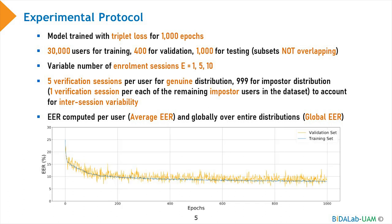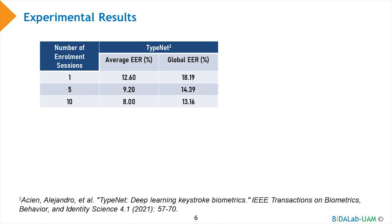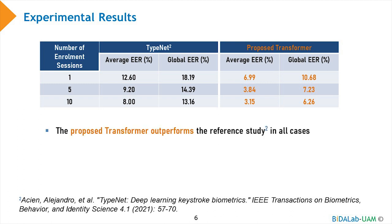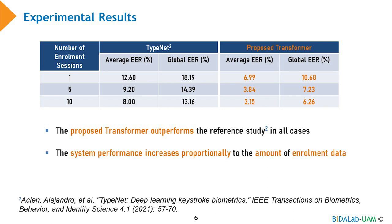The training equal error rate graphs are quite regular for both the training and validation sets. To evaluate our system, we consider a recently published state-of-the-art article on keystroke biometrics based on a long short-term memory recurrent neural network called TypeNet, replicating the same experimental settings using the same database and protocol. In the table, we can see the performance achieved by TypeNet and by the proposed transformer. Along the rows, we have different amounts of enrollment sessions and the two ways of computing the equal error rate. The proposed transformer outperforms TypeNet in all cases, reaching 3.15% average equal error rate with 10 enrollment sessions. There is a solid proportional performance increase related to the amount of enrollment data, and a separate threshold per user always leads to better performance.